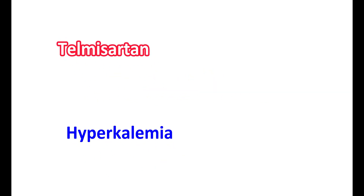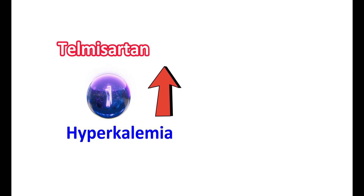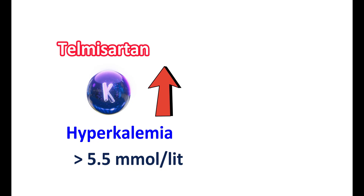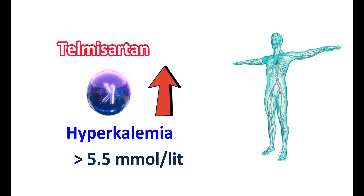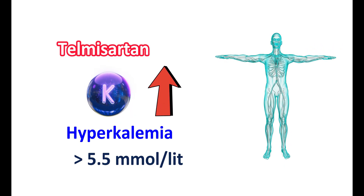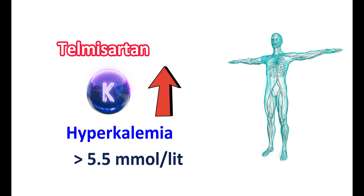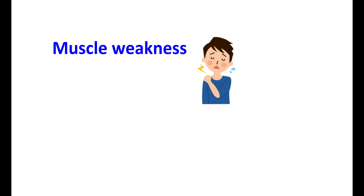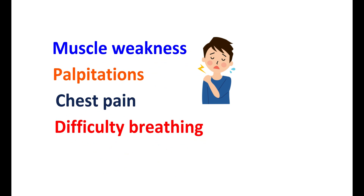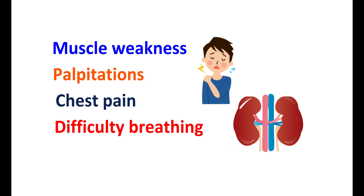Telmisartan can produce hyperkalemia — elevated levels of potassium in the body above 5.5 mmol per liter. Potassium is an important electrolyte that plays a role in controlling the functions of neurons, muscles, and the heart. When its levels are elevated, it may produce impairment in these functions. Symptoms include muscle weakness, palpitations, chest pain, and difficulty breathing. ARBs can interfere with kidney function and reduce the excretion of potassium, leading to more retention in the body. This is more pronounced in people with impaired kidney function or pre-existing diabetes.